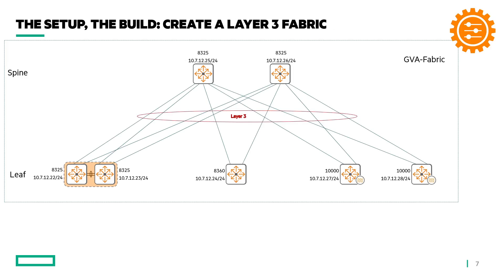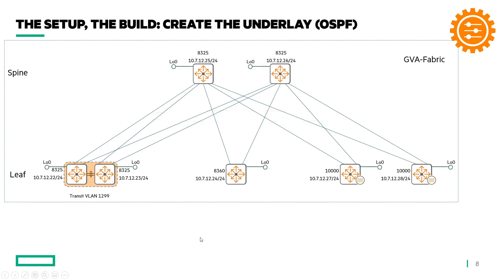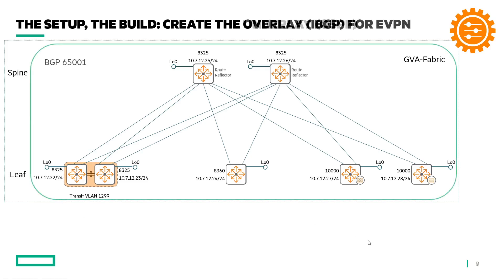Once we've created the VSX pair, I'm going to create a layer 3 fabric spine-leaf, so there will be layer 3 connections between the leaf switches and the spine switches. Then we create the underlay, because we want to build an EVPN VXLAN fabric. The underlay will be based on OSPF.